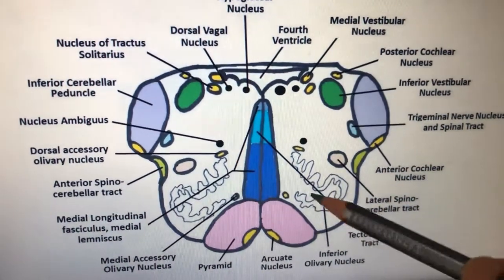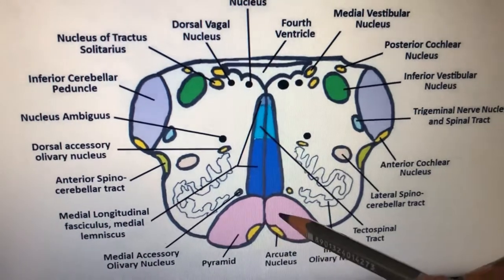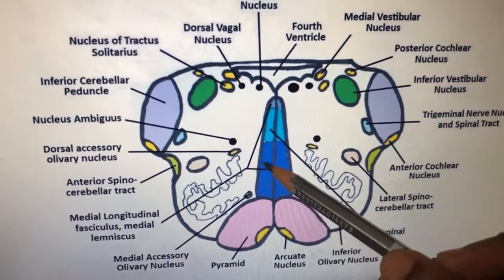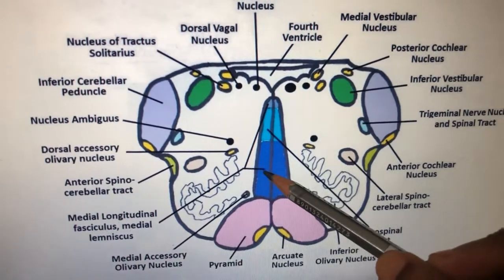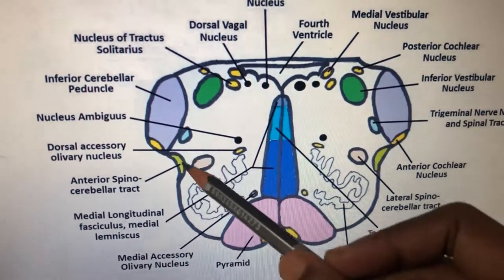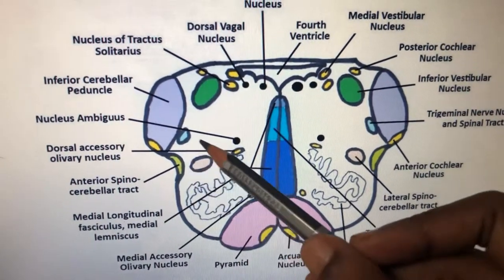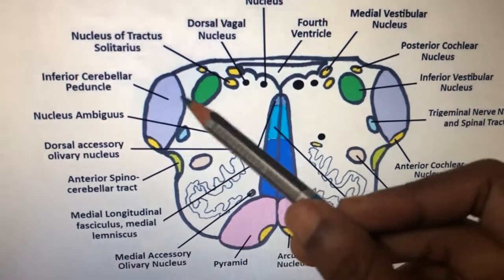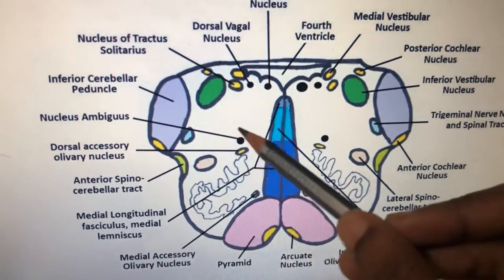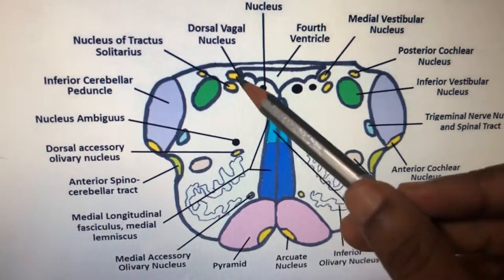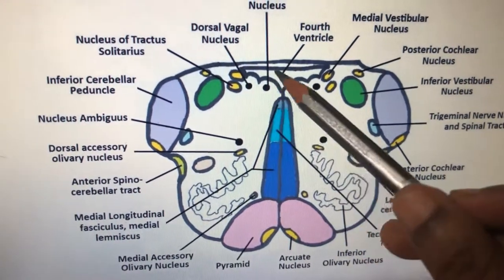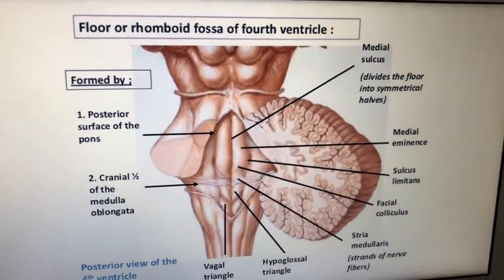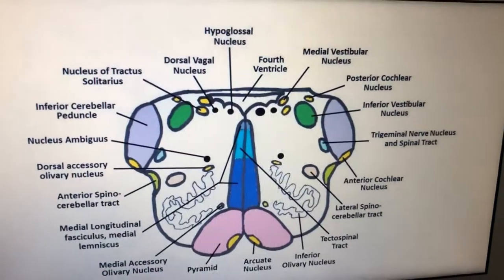That's all about the medulla and important MCQs. Key points: arcuate nucleus, pyramid formed by corticospinal tract, medial lemniscus carries conscious proprioception, lateral spinothalamic tract carries pain and temperature from the opposite side, nucleus ambiguus for 9th/10th/11th cranial nerves, and nucleus tractus solitarius for 7th, 9th, and 10th nerves. Next video will cover the pons.